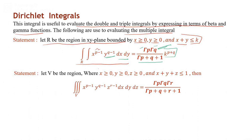Statement 2: Suppose we have a region in xyz-space where x, y, z are all greater than or equal to 0 and x + y + z is less than 1. Then the triple integral of x^(p-1) y^(q-1) z^(r-1) dx dy dz equals gamma(p) * gamma(q) * gamma(r) divided by gamma(p + q + r + 1).